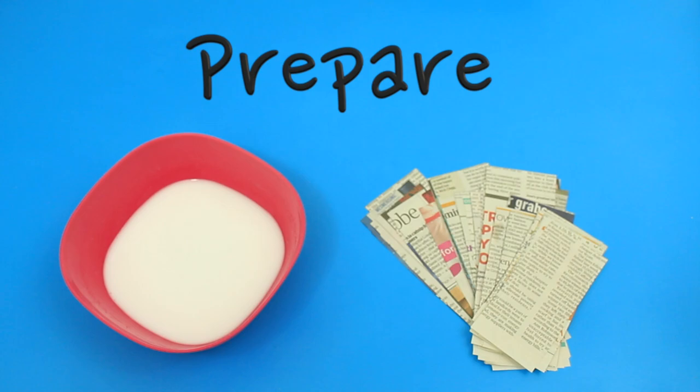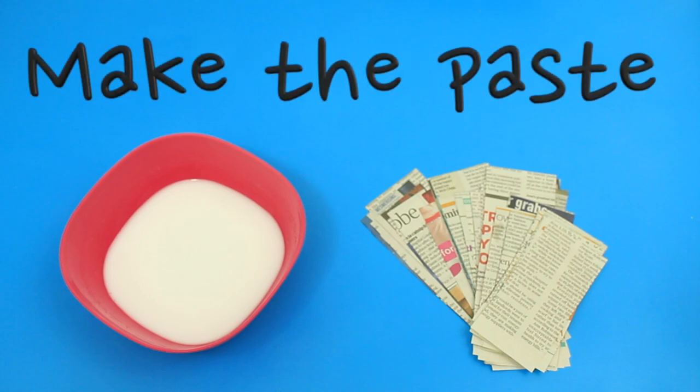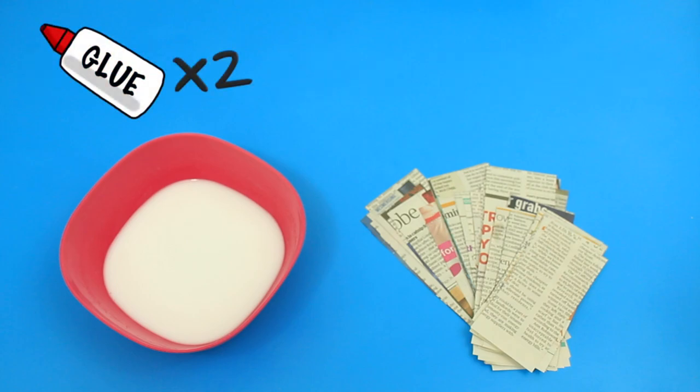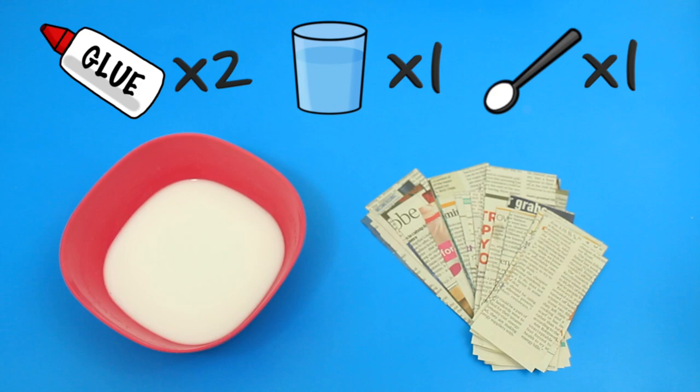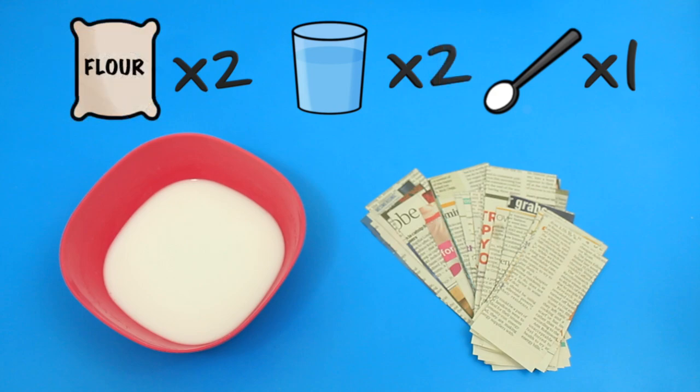Now to make the paste, there are a few different recipes you can try. Firstly, you can add two cups of glue to one cup of water and a teaspoon of salt. Or alternatively, you can add two cups of flour to two cups of water and also a teaspoon of salt. We add the salt to prolong the life of your artwork; basically it's going to stop it from going moldy.